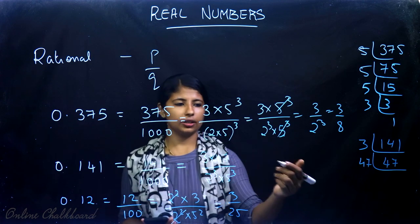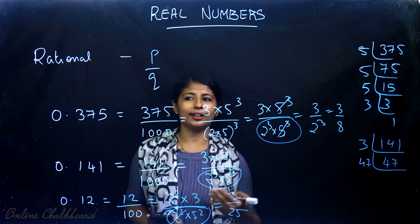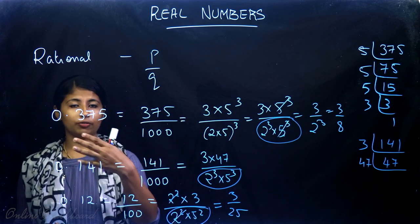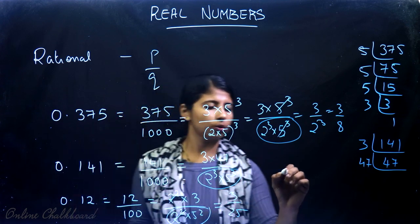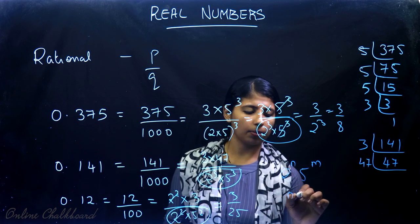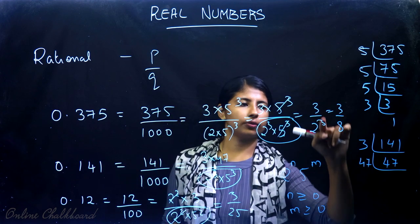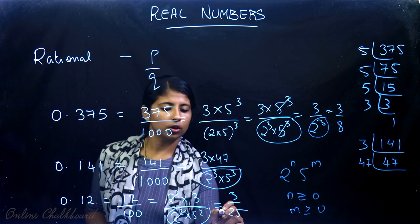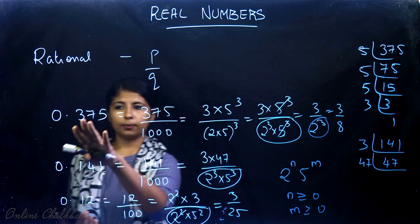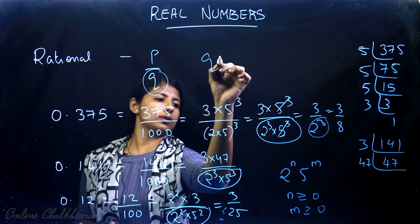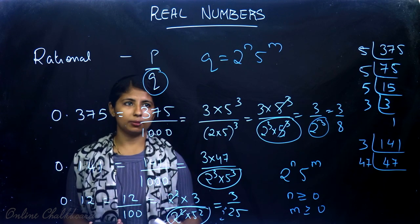In all these numbers, you see that the denominator is coming as some power of 2 and 5. So you understand that for the decimal expansion of a rational number to terminate, the denominator Q in P by Q should be of the form 2 raised to n into 5 raised to m, where n is greater than or equal to 0 and m is also greater than or equal to 0. So we understand: for a terminating decimal expansion, Q must be of the form 2 raised to n into 5 raised to m.